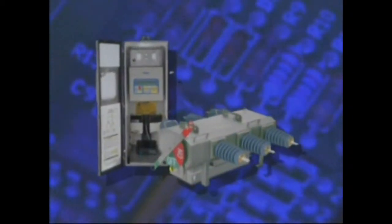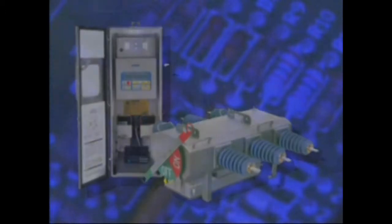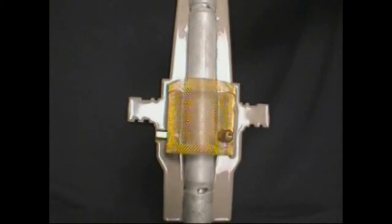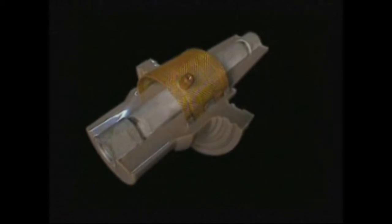Features of the fully automated sectionalizer include current measurement on all three phases using current transformers installed inside the tank. Capacitive voltage transformers molded into each epoxy bushing, providing three phase voltage measurement on both the line and load side of the load brake switch.